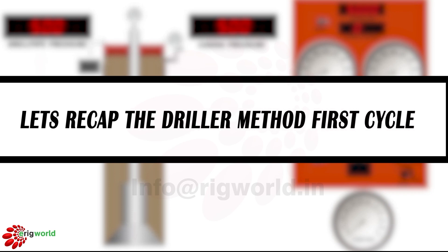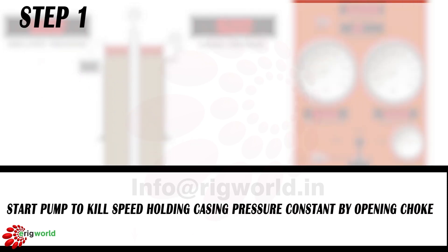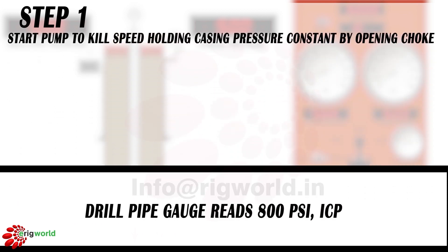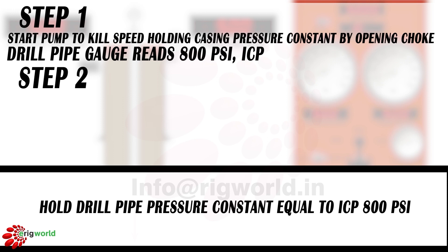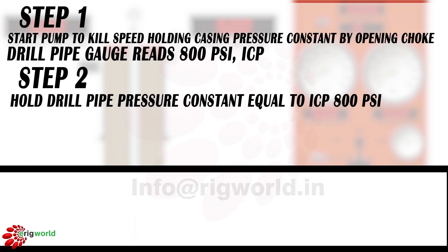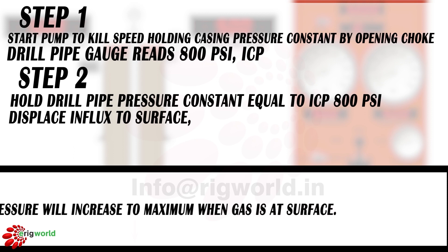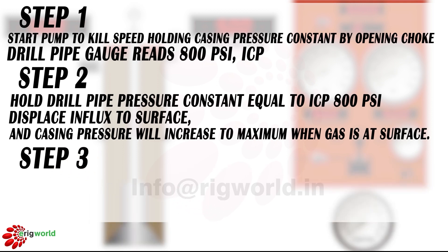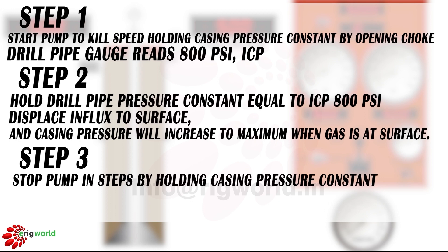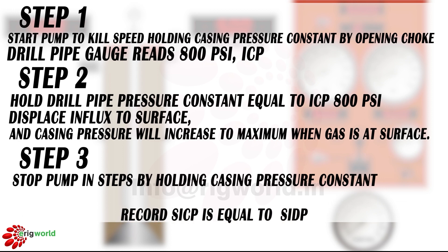Let's recap the driller method first cycle. Step 1: start pump to kill speed holding casing pressure constant by opening the choke — drill pipe gauge reads 800 psi (ICP). Step 2: hold drill pipe pressure constant equal to ICP at 800 psi, because the drill pipe has a single fluid — applying thumb rule number 2. Keep drill pipe pressure constant at ICP to displace influx gas to surface. Casing pressure increases to maximum when gas is at surface; after influx is removed from annulus, pressure decreases to original SIDPP. Step 3: stop pump in steps by holding casing pressure constant — applying thumb rule number 1. Record that SICP equals SIDPP.